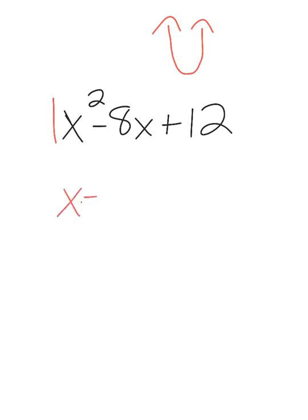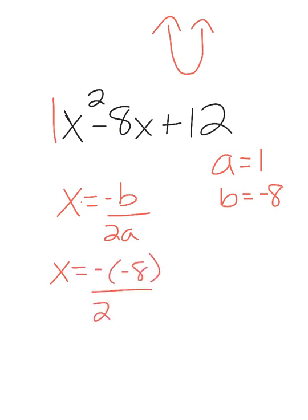It's part of the quadratic formula. It's the opposite of B over 2A. I know A is 1 and B is negative 8. So I have the opposite of negative 8 over 2 times 1. The opposite of negative 8 is 8, over 2 is 4. That's X.